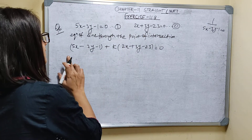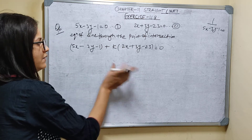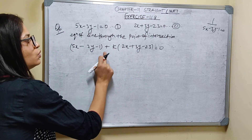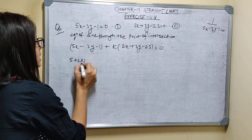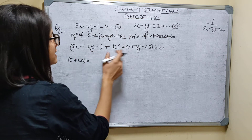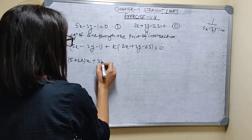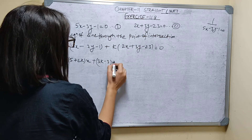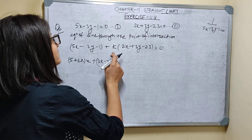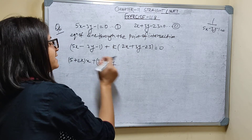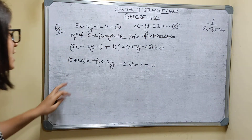Now I will collect the x and y terms. Grouping x terms: 5x plus 2Kx gives (5 plus 2K)x. Grouping y terms: minus 3y plus 3Ky gives (3K minus 3)y. And the constant terms: minus 23K minus 1.